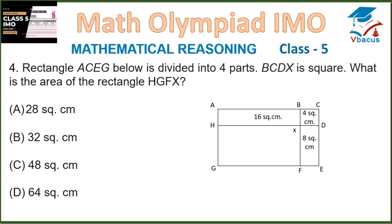Question 4. Rectangle A, C, E, G is divided into 4 parts. B, C, D, X is a square. What is the area of rectangle H, G, F, X? Let us identify rectangle H, G, F, X and find its area.